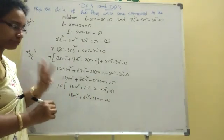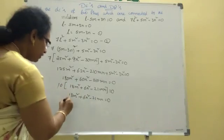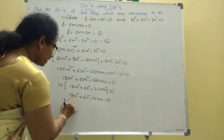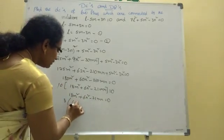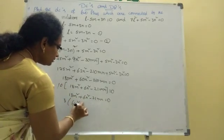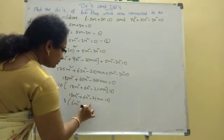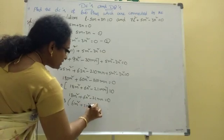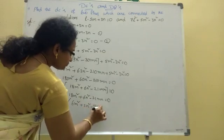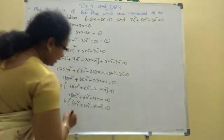Dividing through by 30: 6N squared minus 21MN equal to 0, giving 6N squared minus 7MN — wait, checking the 6 table and 21: the common factor is 3. So: 3 divides into 6 giving 2, into 21 giving 7.